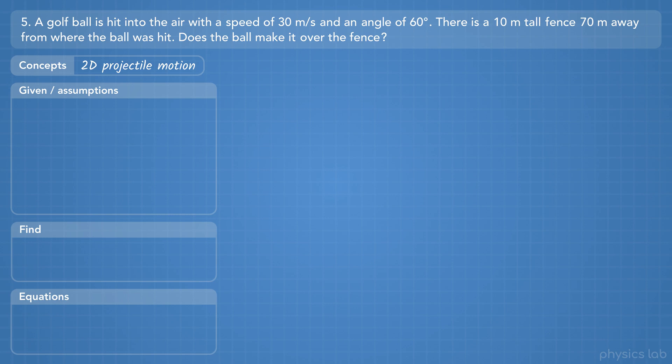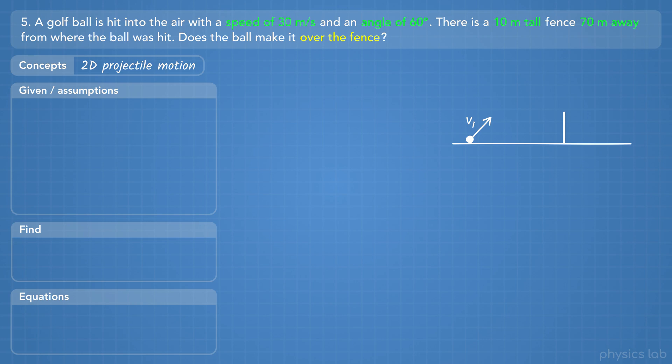Alright, what information are we given? A golf ball is hit into the air with a speed of 30 m per second and an angle of 60 degrees. There is a 10 meter tall fence 70 meters away from where the ball was hit. We're going to assume the ball is hit from the ground, so let's draw the ground, the ball, the initial velocity vector, and the fence. The fence is 70 meters away from the starting point, and it's 10 meters tall.